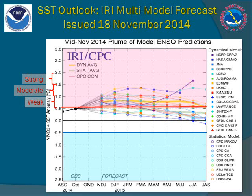From all these models in this image, we can see the most likely outcome — or average of the models — yields a sea surface temperature just above 0.5 degrees, the El Niño threshold, for several months heading into the spring of 2015. A few models never fully reached the El Niño threshold, while an even lesser amount pushed sea surface temperature anomalies into the moderate category.